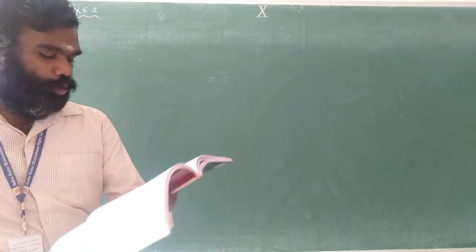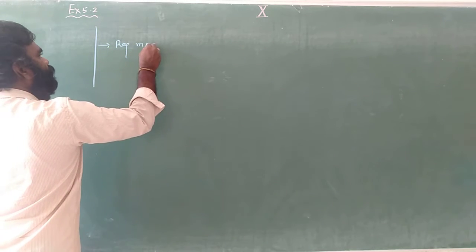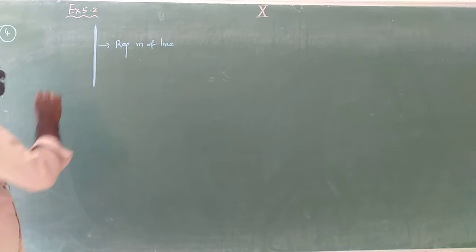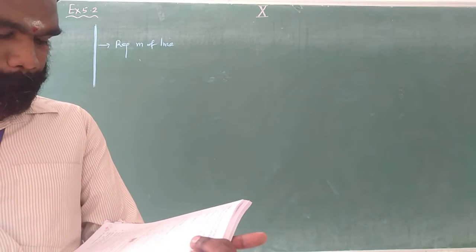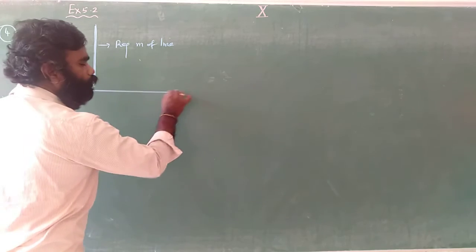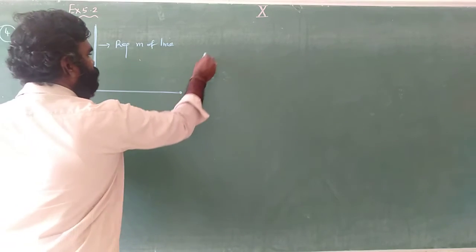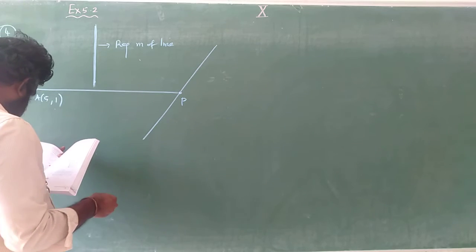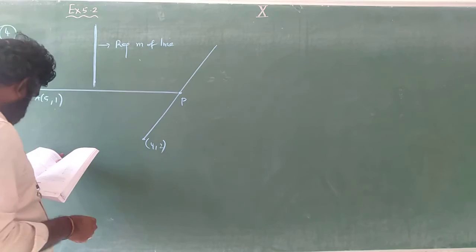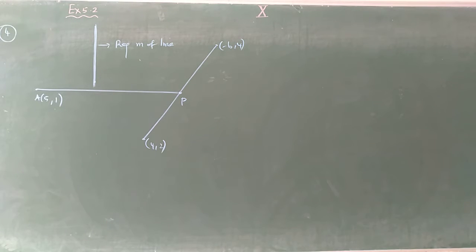What is the slope? I need to find the slope of a line. This line is perpendicular to line AP, where P is a point — specifically, P is the midpoint of a line segment. The points given are M(4, 2) and N(-6, 4). I need to find the slope of this perpendicular line.